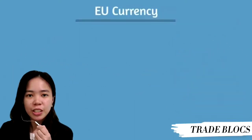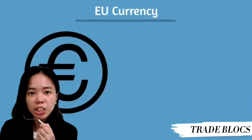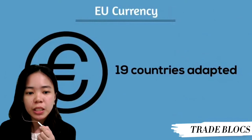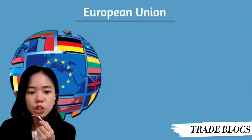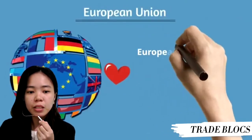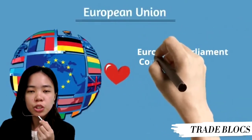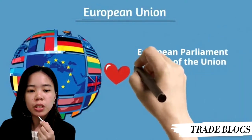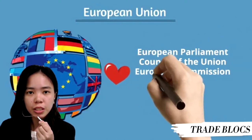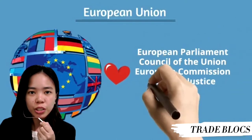The main currency is the euro, and 19 countries have adopted it. The EU is run by five main bodies: the European Parliament, the Council of the Union, the European Commission, the Court of Justice, and the Court of Auditors.